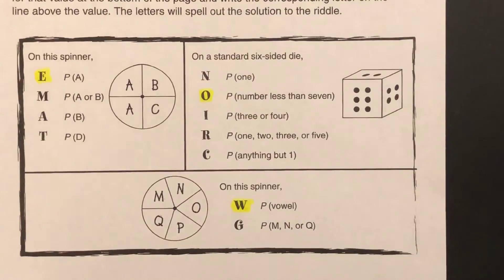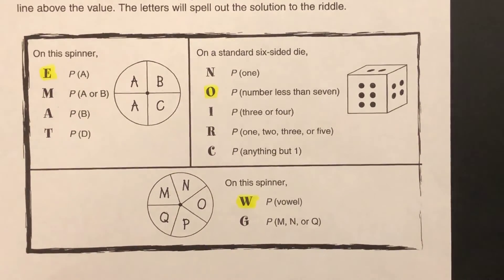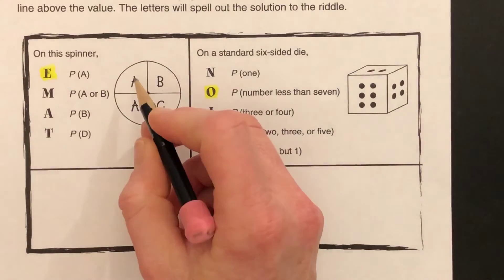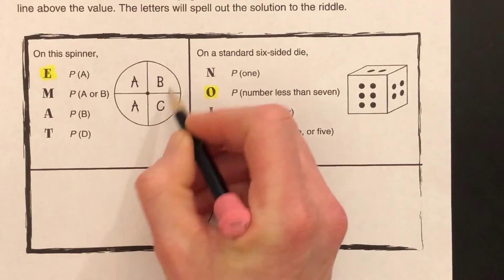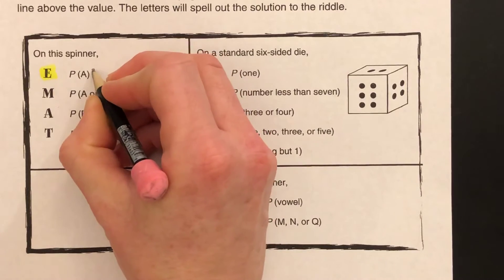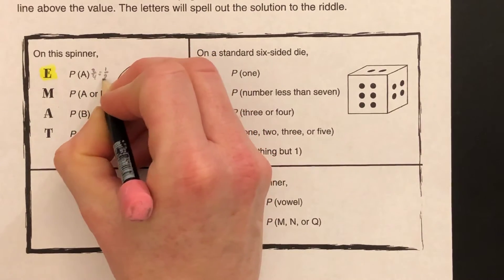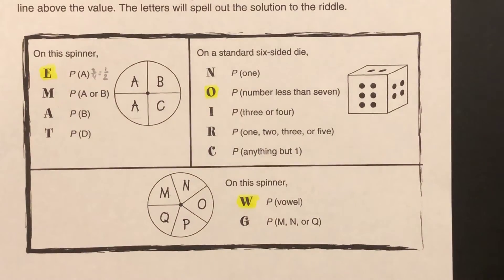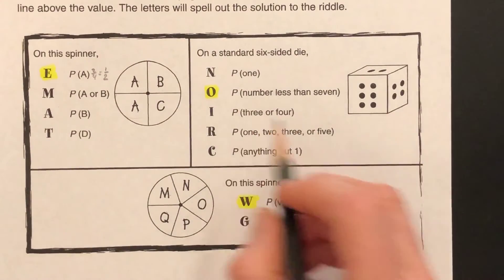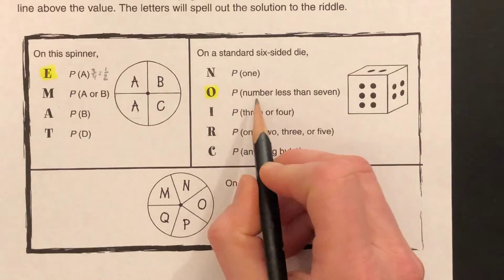On this spinner, the probability of A, well, A is two out of four possible outcomes, B is two-fourths, which reduces to one-half. And then we go on to this one, the probability of a number less than seven.